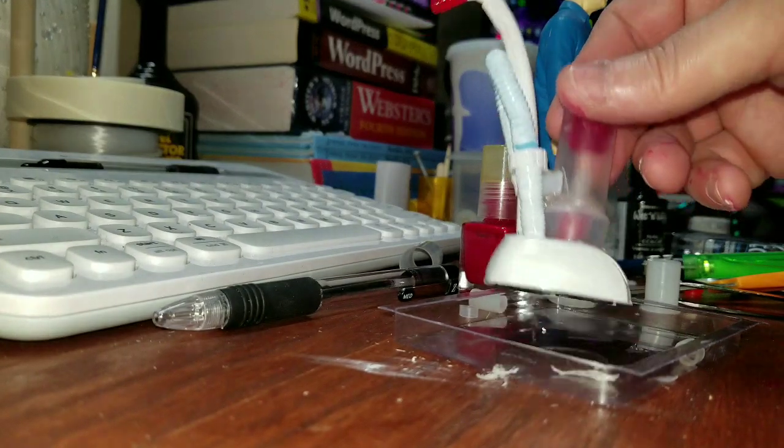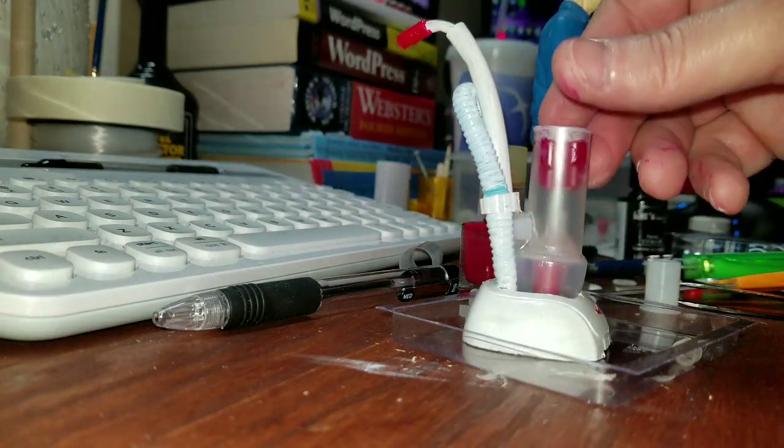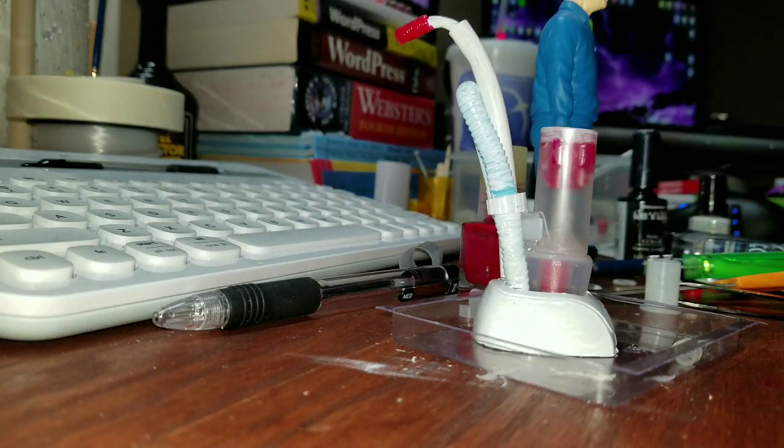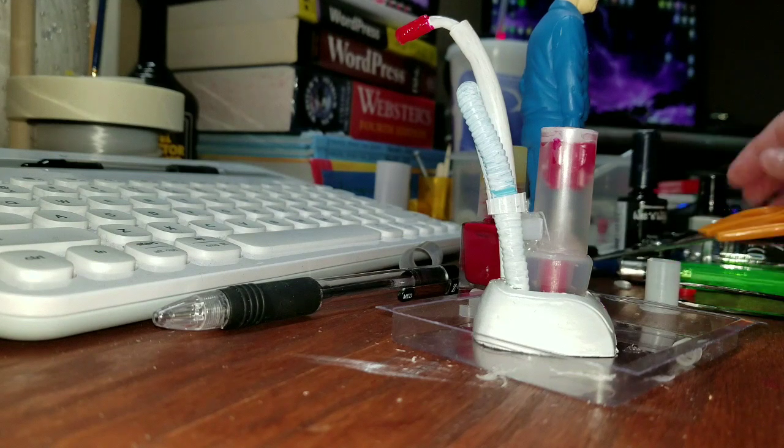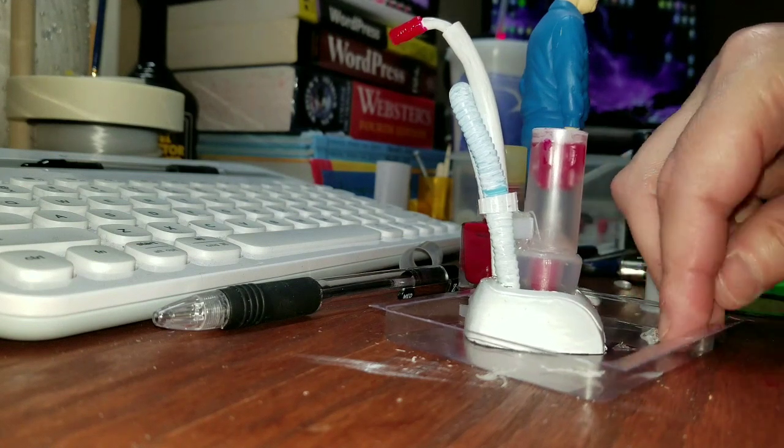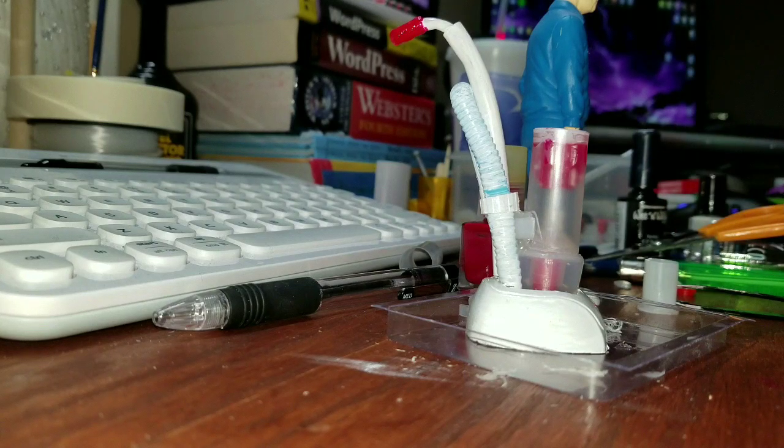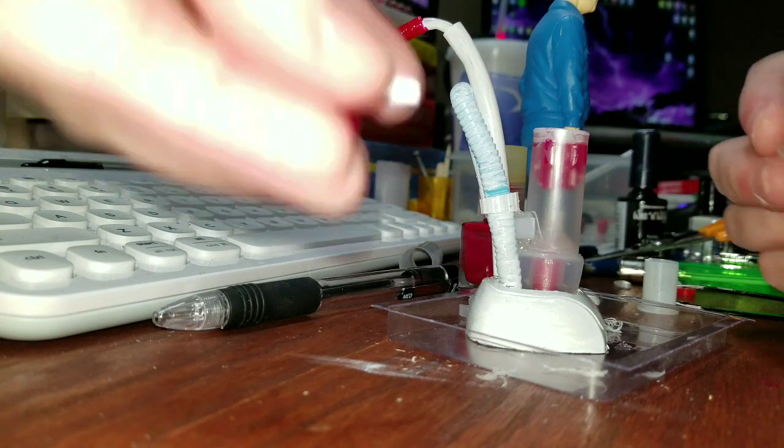So now what you want to do is fill the bottom with hot glue to hold everything in place. And then you want to take some tubing that's a little bit larger than the tubing that you have for your attachments.